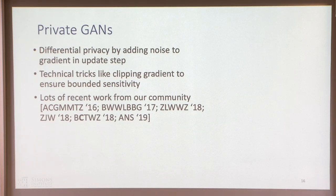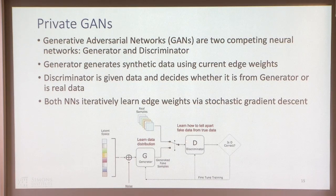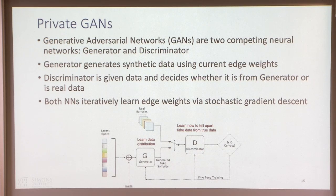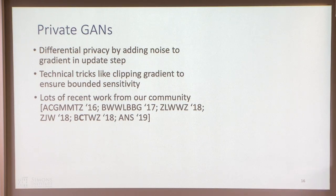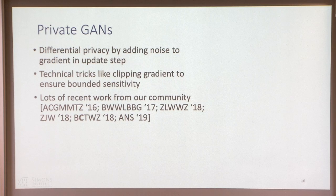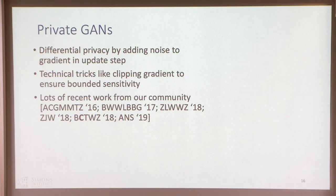To privatize GANs, we really just have to add noise in the gradient update step. We actually only have to add noise to D because D is the only one who sees the raw data; everything after that is just post-processing, which preserves privacy. So we train G regularly and D privately. To do so, we add noise into the gradient in the update step. There are some tricks: you have to clip things to ensure bounded sensitivity of the gradient. But it essentially boils down at a high level to just this core idea.